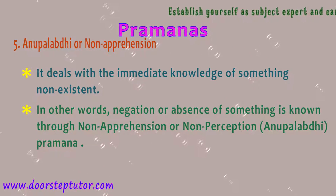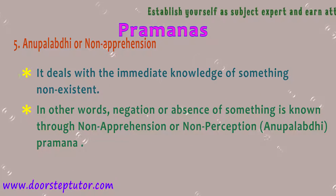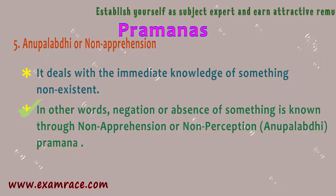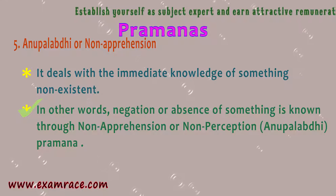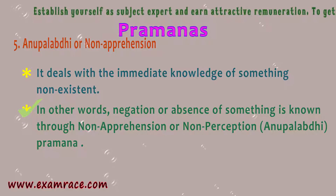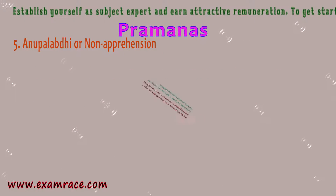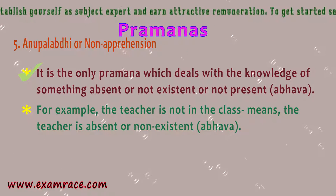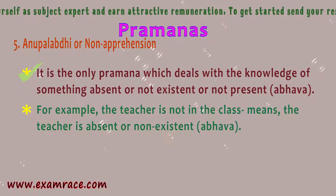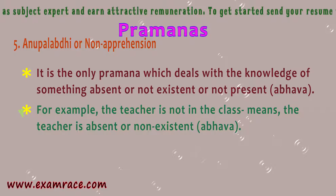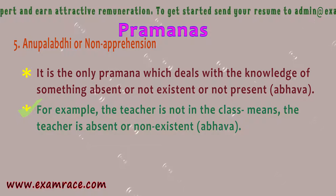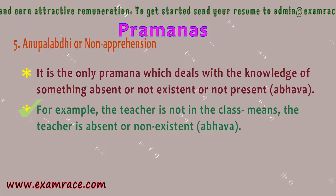Number 5: Anupalabdhi, or Non-Apprehension. It deals with the immediate knowledge of something non-existent. Negation or absence of something is known through non-apprehension, or Anupalabdhi Pramana — the only Pramana dealing with knowledge of something absent or non-existent (Abhava). For example, 'the teacher is not in the class' means the teacher is absent or non-existent — Abhava.